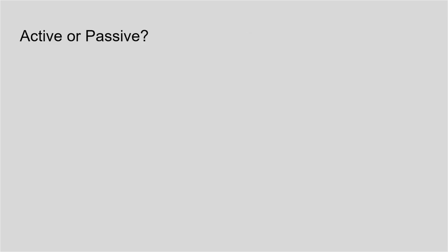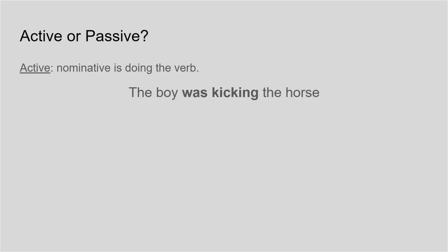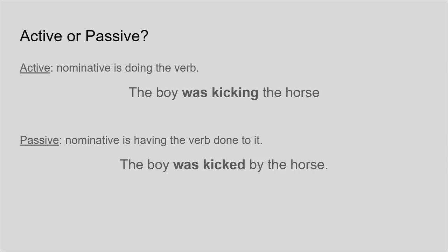So active or passive verbs. An active verb is a verb where the nominative is doing the verb — for example, the boy was kicking the horse. A passive verb is where the nominative is having the verb done to it, so the person is still grammatically the nominative but they're no longer doing the verb. For example, the boy was kicked by the horse. The boy is still the nominative but his role in the sentence has changed — he is now being kicked.